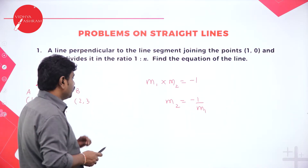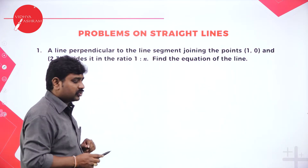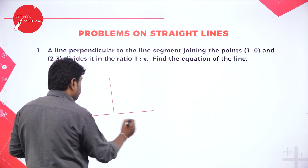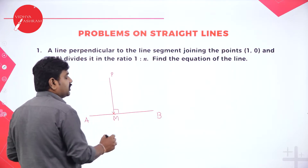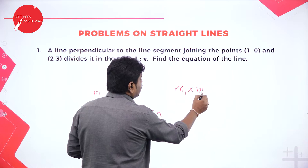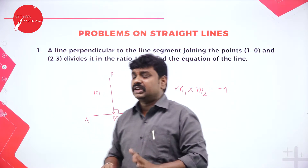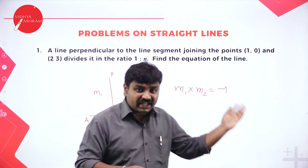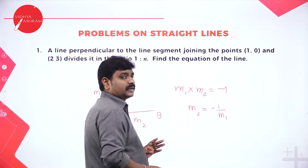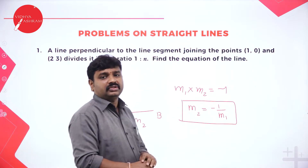So directly you can use: M2 is minus 1 by M1. If you can find M1, then M2 follows. Now you should also know the section formula. If a point P divides AB in the ratio M is to N internally, and A is (X1, Y1) and B is (X2, Y2), then the point of division is ((MX2 + NX1)/(M+N), (MY2 + NY1)/(M+N)).